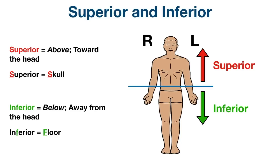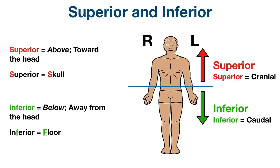Superior and inferior also go by different names. Another name for superior is cranial, which makes sense because we're moving toward the cranium or head. Another name for inferior is caudal. Caudal means tail, so it makes sense that inferior is also known as caudal because we're moving toward the tail or away from the head.